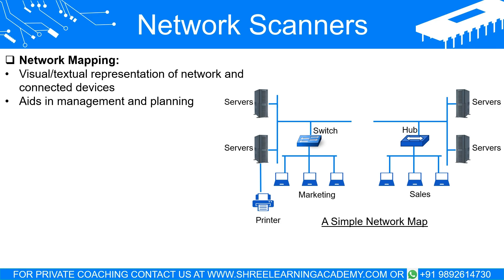A network map might include details such as the IP addresses of the devices, their MAC addresses, which subnet group they belong to, their operating system type, and the system's name or identity. Having all this information allows for better network management and planning. For instance, if an organization plans to upgrade its network infrastructure, having a current network map can help identify where upgrades might be needed, what devices might be affected, and how to plan for potential downtime.